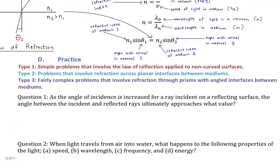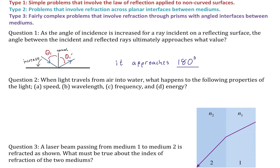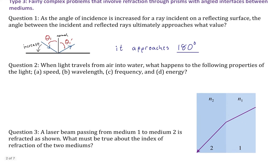Concept question one: as the angle of incidence is increased for a ray incident on a reflecting surface, the angle between the incident and reflected rays ultimately approaches what value? The idea is we're going to increase the incident angle, making it more and more obtuse — it's kind of just grazing the surface. It approaches 180 degrees. If the angle relative to the normal was so close to 90 degrees, the ray would almost just graze the surface and you'd have 180 degrees.